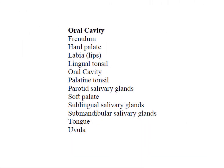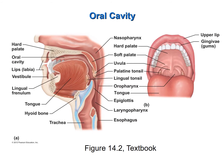The structures of the oral cavity that you are responsible for identifying are listed on your study guide. This is an image from your textbook. It shows an anterior view of the oral cavity on the right and a corresponding sagittal section of the oral cavity and the pharynx on the left.